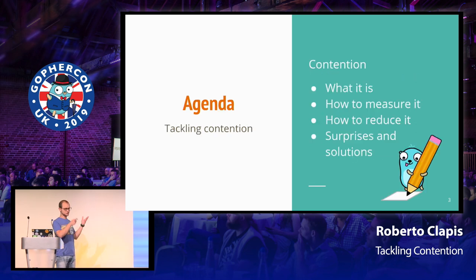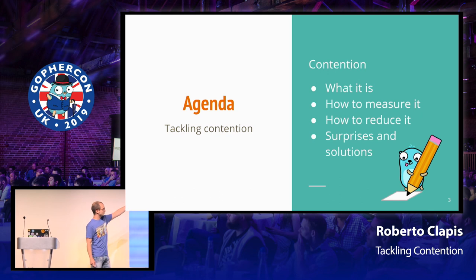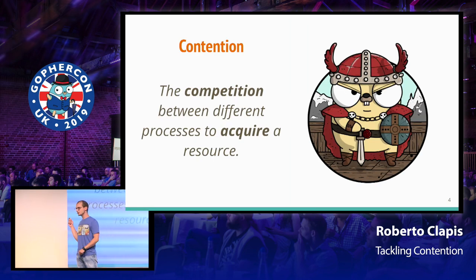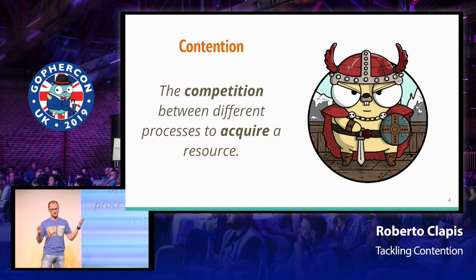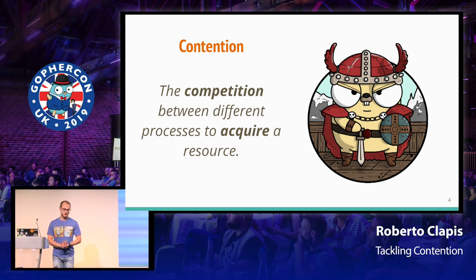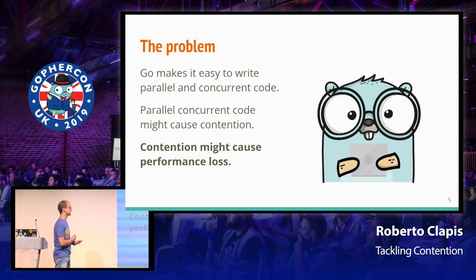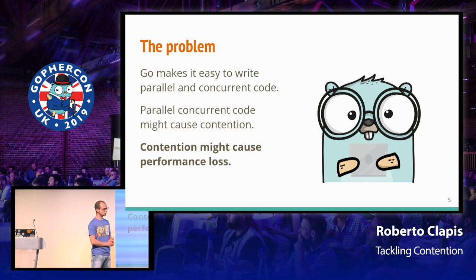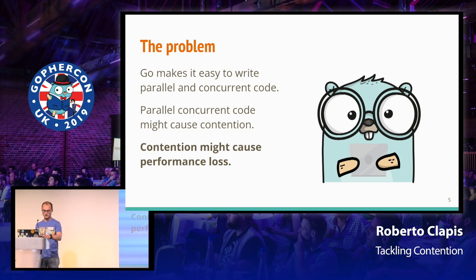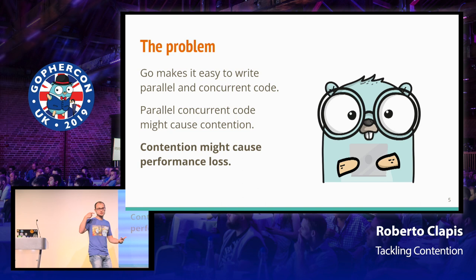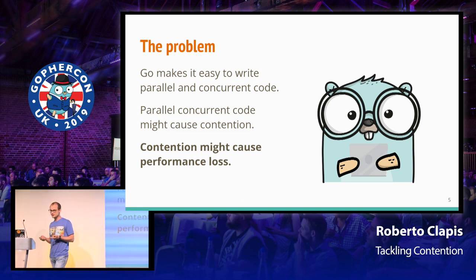Before I start with my talk, I would like to introduce the agenda. We're about to talk about contention: what it is, how to measure it, how to reduce it, and some surprising facts about it. Contention is a competition between processes to acquire a resource. That doesn't only happen in programming — it happens everywhere. And since I'm a scientist, when I need to face a new beast, I want to measure it.